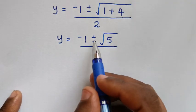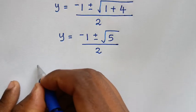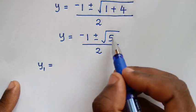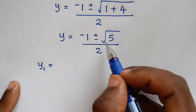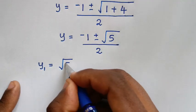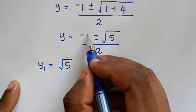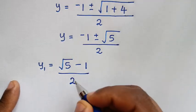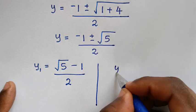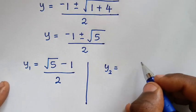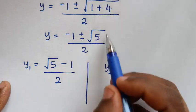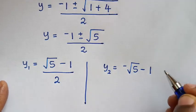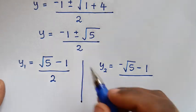We have two solutions because of the plus or minus. The first value is y = (√5 − 1) / 2, and the second value is y = (−√5 − 1) / 2.